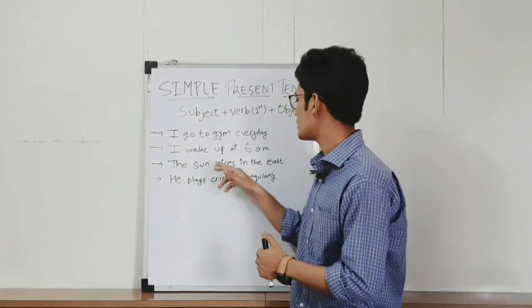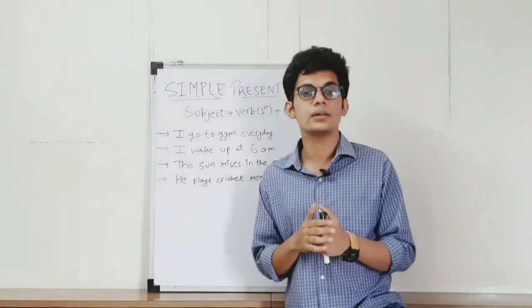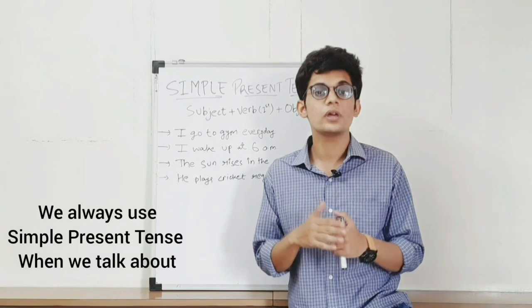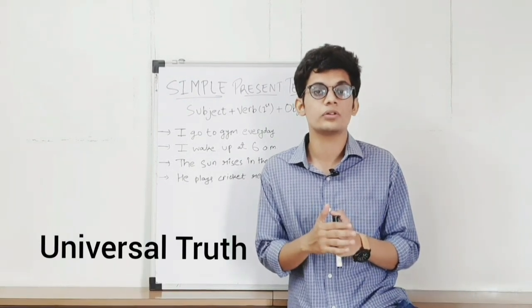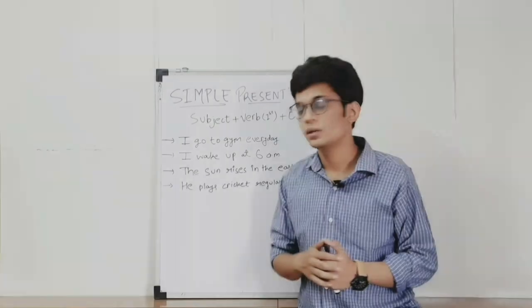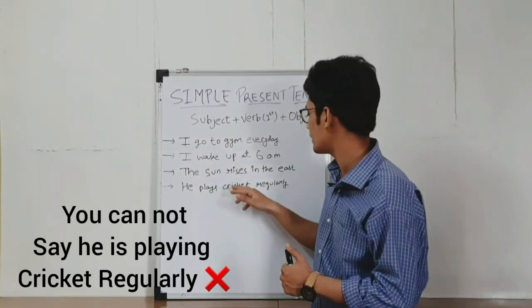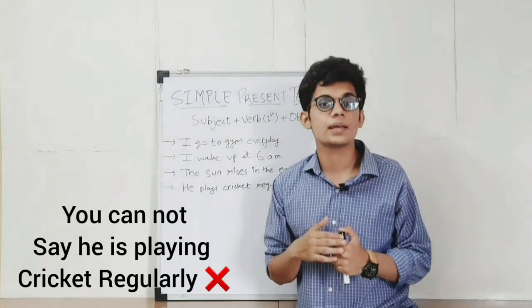Now the third one: 'The Sun rises in the East.' This sentence is a universal truth. We always use Simple Present Tense when we talk about universal truths. Number four: 'He plays cricket regularly.' That means at some period of